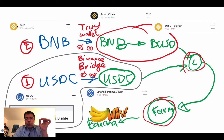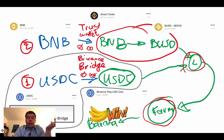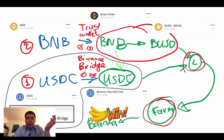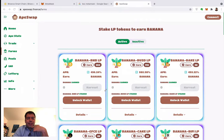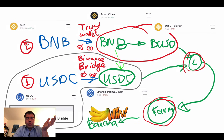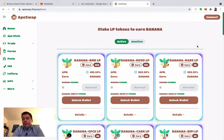We're going to take some BNB — you can see the symbol next to it, this is how it will look on your Trust Wallet. Then we'll move it into the Binance Smart Chain, convert some to BUSD and some to USDC in the Binance chain, add those two to a liquidity pool, farm them, and earn BANANA — which is the currency of ApeSwap.